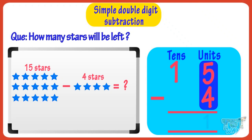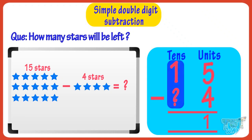So write 1 below ones place in the sum. Now there is nothing to subtract from 1. So write 1 at the tens place. So we got to know 15 minus 4, you get 11. So 11 stars will be left.